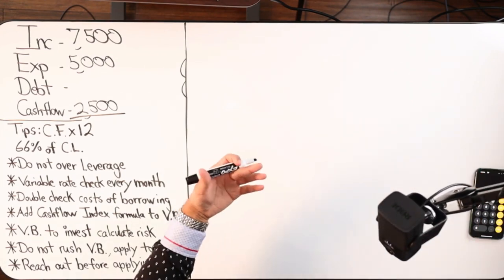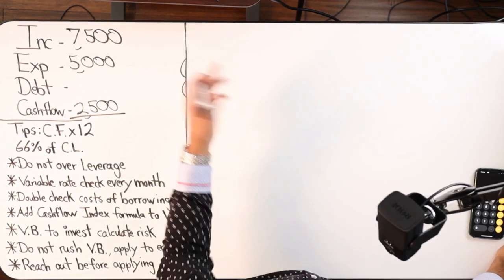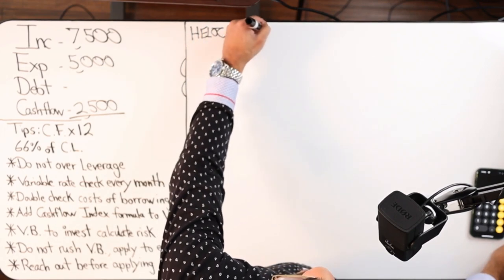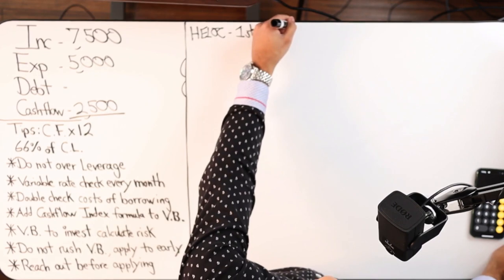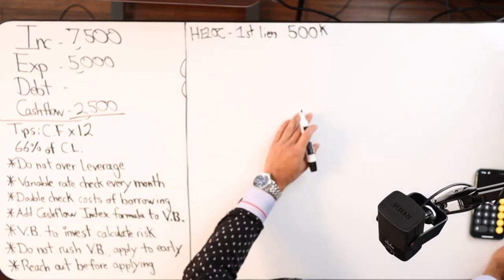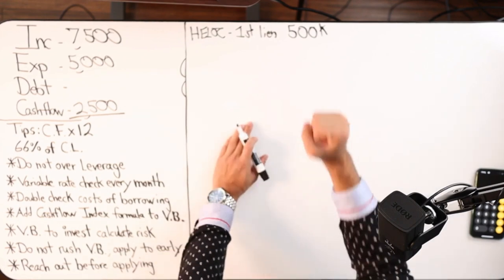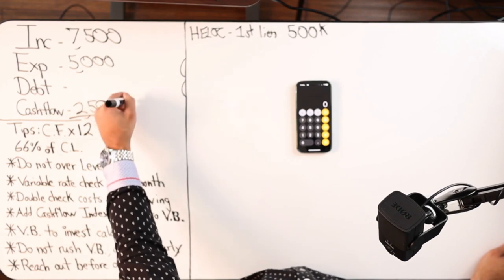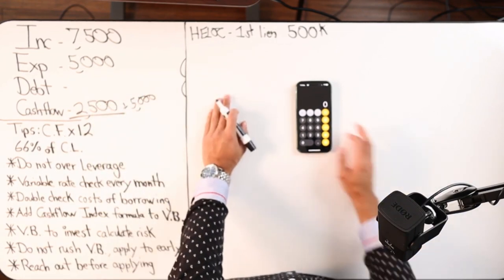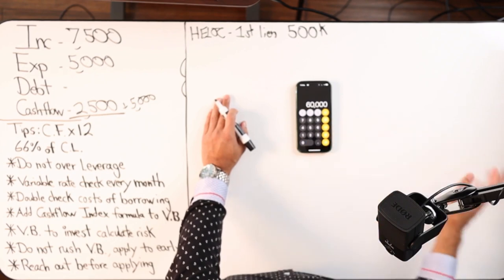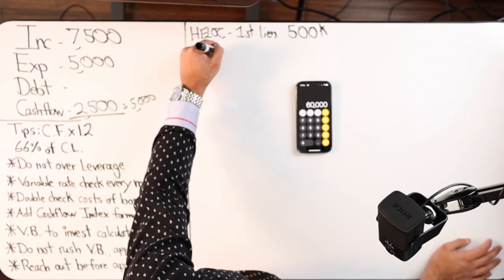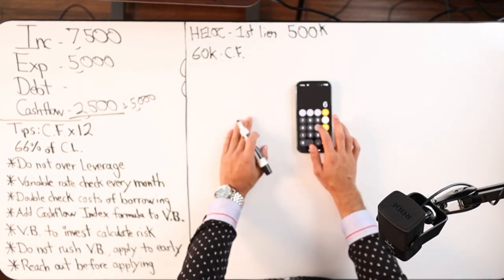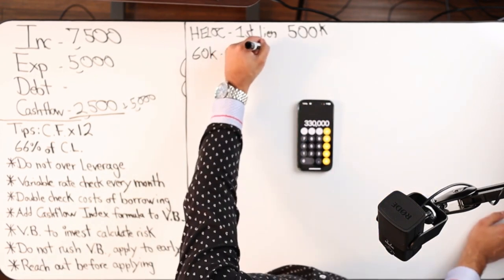Now we need to run some numbers on making sure we don't over leverage. Let's say you have a HELOC, you're in the house, you're debt-free, and you got a first lien home equity line of credit, and your credit limit is $500,000, and you owe nothing. It's at zero balance. So let's say that you're cash flowing because you paid off all your debt. Let's say you increased your cash flow to five grand. So 5,000 times 12 is 60K a year.